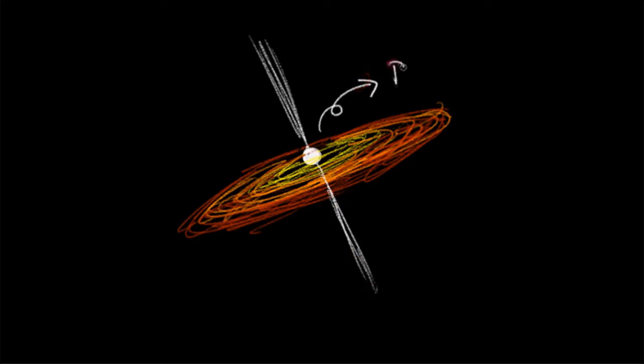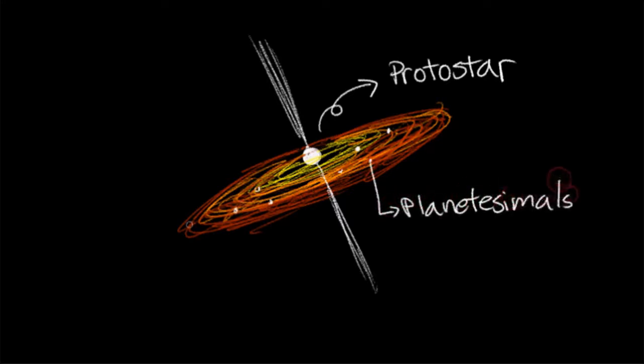A protostar forms at the centre of this disk which will eventually become our sun, while the seeds of the planets, called planetesimals, start to form in the disk.